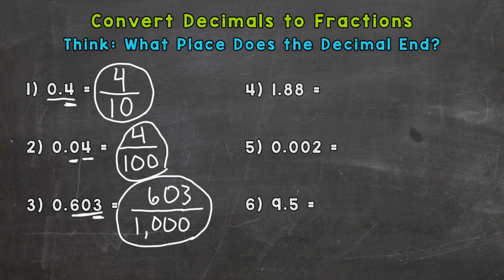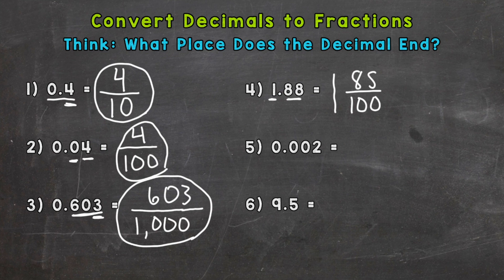Number four is going to be a mixed number — a whole number and a fraction. Our whole number is one, and then we have eighty-eight hundredths. The decimal ends in the hundredths, so our denominator is 100 and the number to the right of the decimal is 88. So the answer is one and eighty-eight hundredths.